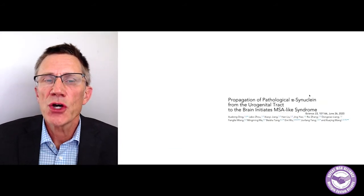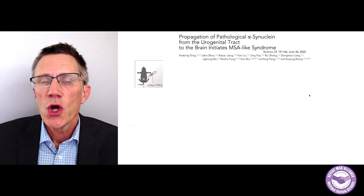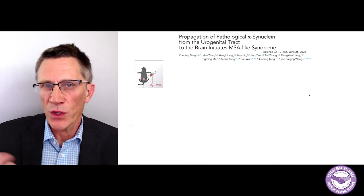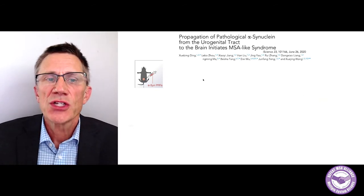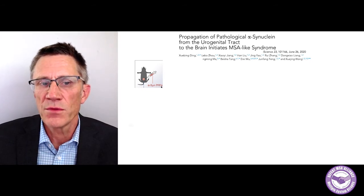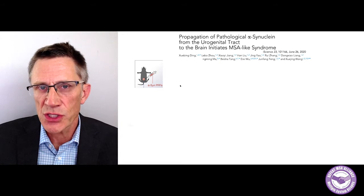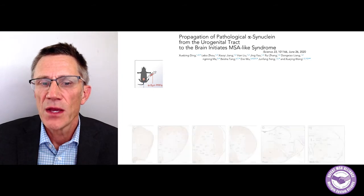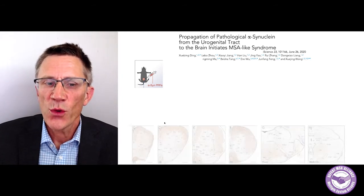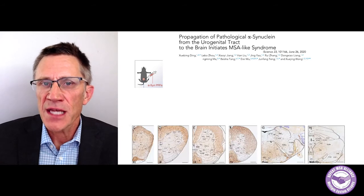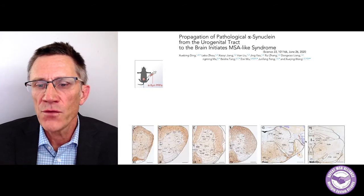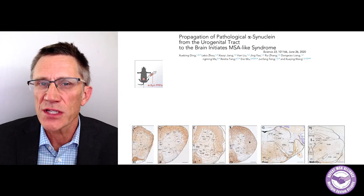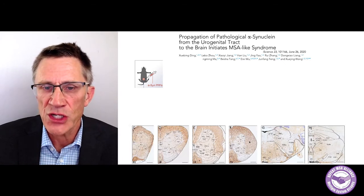In the same study, they created a mouse model trying to replicate what they think happens in humans. They injected synuclein PFFs — pre-formed fibrils, which are aggregates made in a test tube — into the wall of the mouse bladder. Lo and behold, all this brown material is synuclein aggregates found a few months later inside the central nervous system, far away from the injection site.